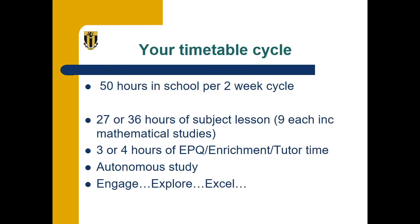So, you've chosen your options — what can you look forward to in September? Over a two-week period, as each cycle of our timetable takes two weeks, you can expect 27 or 36 hours of taught subject lessons, depending on whether you've chosen three or four A Levels, three or four hours of EPQ and tutor time, autonomous and independent study, and the opportunity to engage, explore, and excel, not only in your subjects but also in the school community.